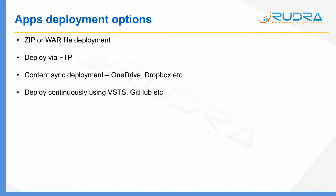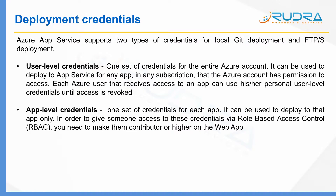In terms of credentials to publish content into Azure App Service when using FTP or GitHub, there are two types. The first type is user-level credentials — this is one set of credentials for the entire Azure account. You can use these credentials to publish content to any App Service you have access to in Microsoft Azure, making them high-level, account-wide credentials.